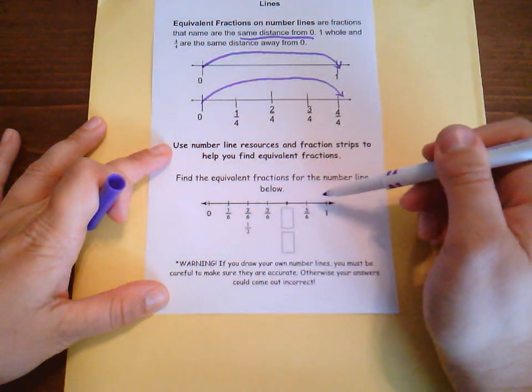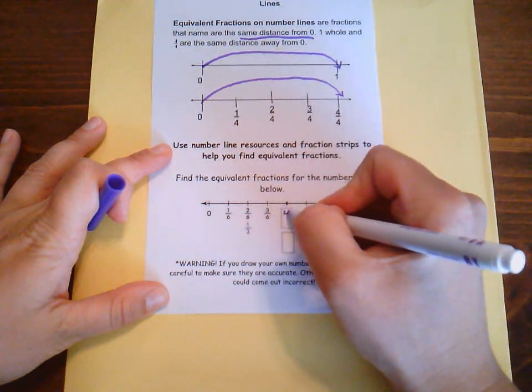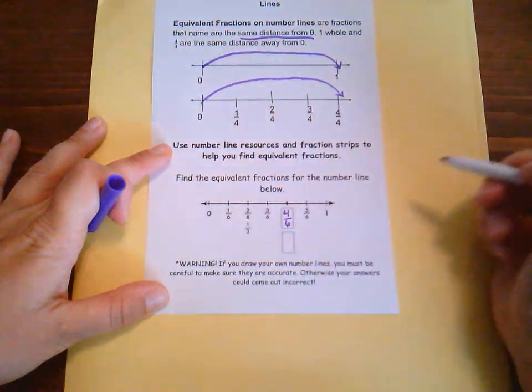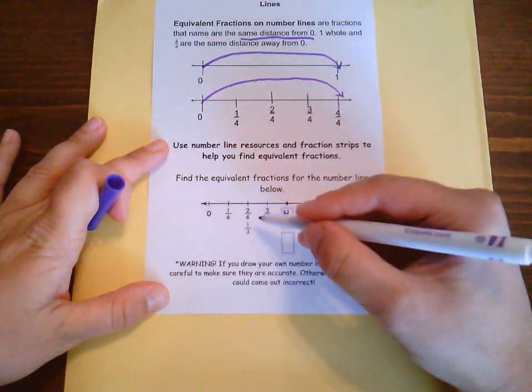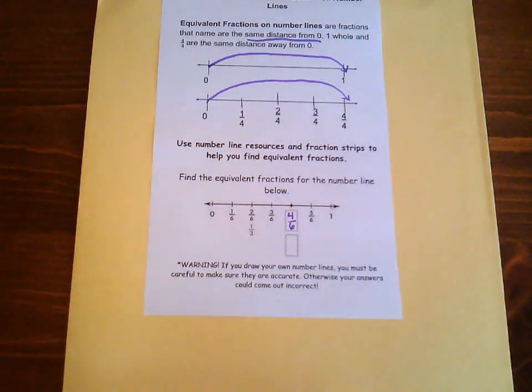So first, I can look at my sixths, and I see one sixth, two sixths, three sixths. So I know my next fraction here will be four sixths. And down here with thirds, I need to figure out what fraction is equivalent to two thirds.